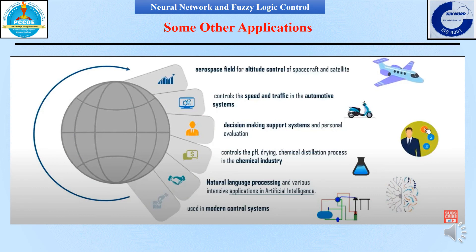There are many more applications of this course. This theory is used in the aerospace field for altitude control of spacecraft and satellites. It is used to control speed and traffic in automotive systems. It is used in decision making support systems and personal evaluation, to control pH and drying chemical distillation processes in the chemical industry, and also in natural language processing and various applications in artificial intelligence. It is also used in modern control systems.